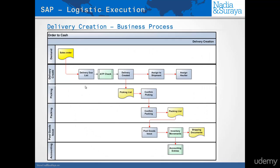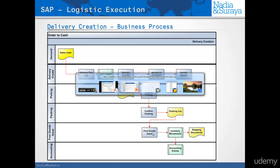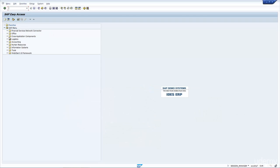All through the day, for example, you would do this. You would create the delivery and then run the transaction and say, show me all the deliveries that need to be picked. You pick one, do the confirmation, and then say, show me everything that needs to be packed. You do the packing list and then run the program again and say, show me everything that needs to be goods issued, and process the document.